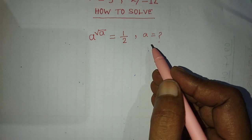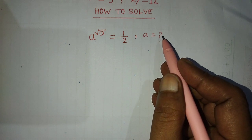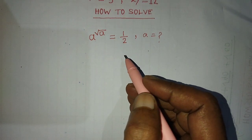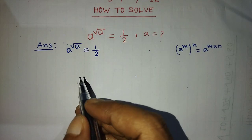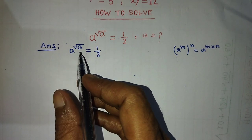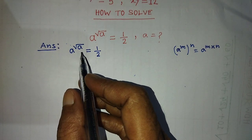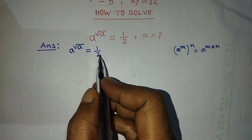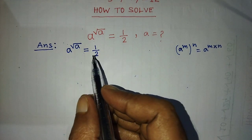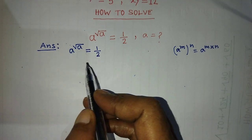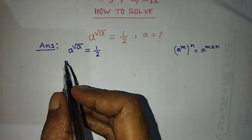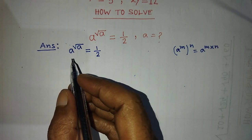In this video, I will tell you how to find the value of a from this exponential equation. Our given exponential equation is a to the power root over of a is equal to 1 over 2. To find the value of a, first of all we have to take the power 1 by 2 on both sides.